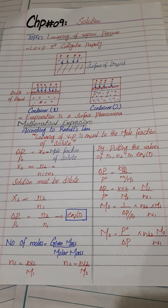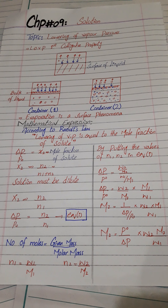Rearranging for M2, the formula becomes: M2 equals (p0 over delta p) times (w2 times M1) over w1. Here, p0 is the vapor pressure of the pure solvent, and delta p is the lowering of vapor pressure when solute is added to the solution. This is the derived formula for lowering of vapor pressure.